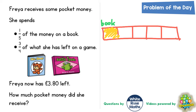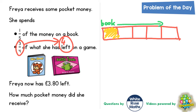She now has four pieces left, and she spends three quarters of what she has left. She does actually only have four pieces left, so this question is saying she spends three quarters of the four pieces which are left — three out of the four pieces. These three pieces out of the four that are left she is spending on a game, so we scribble out these three pieces as well.